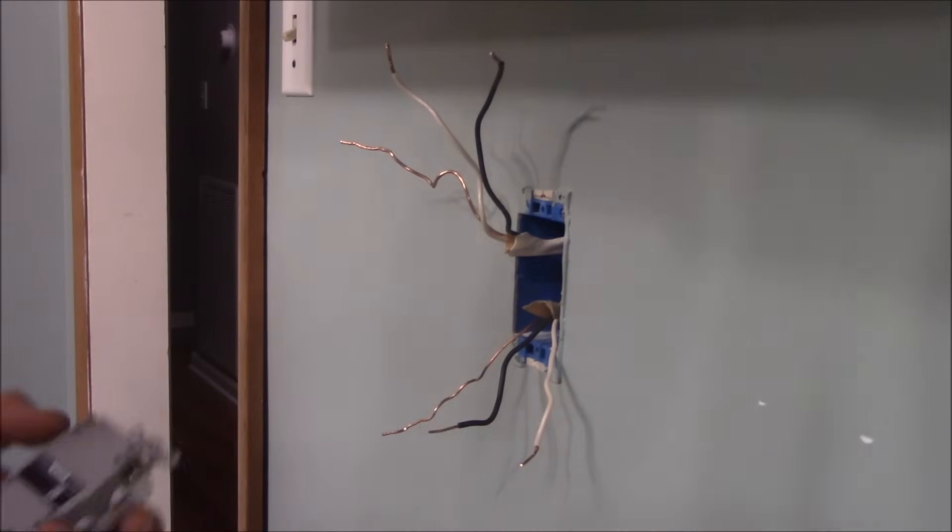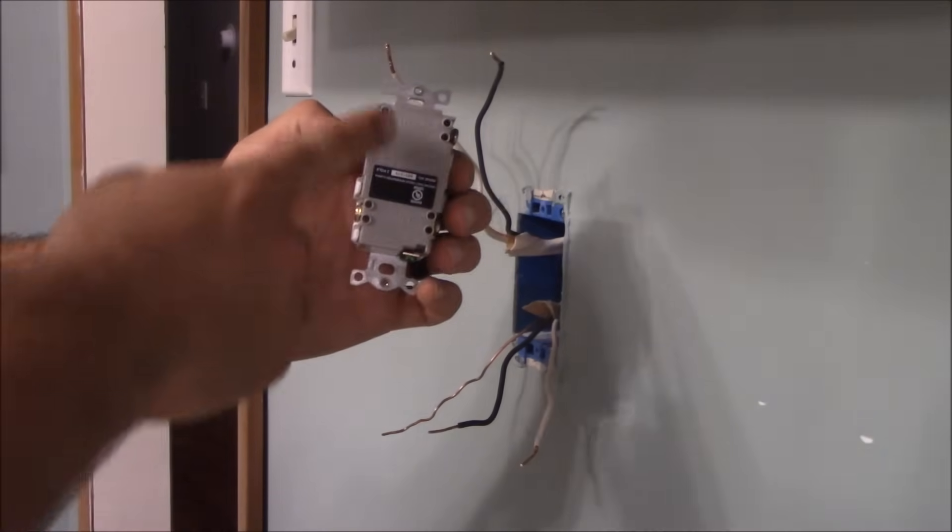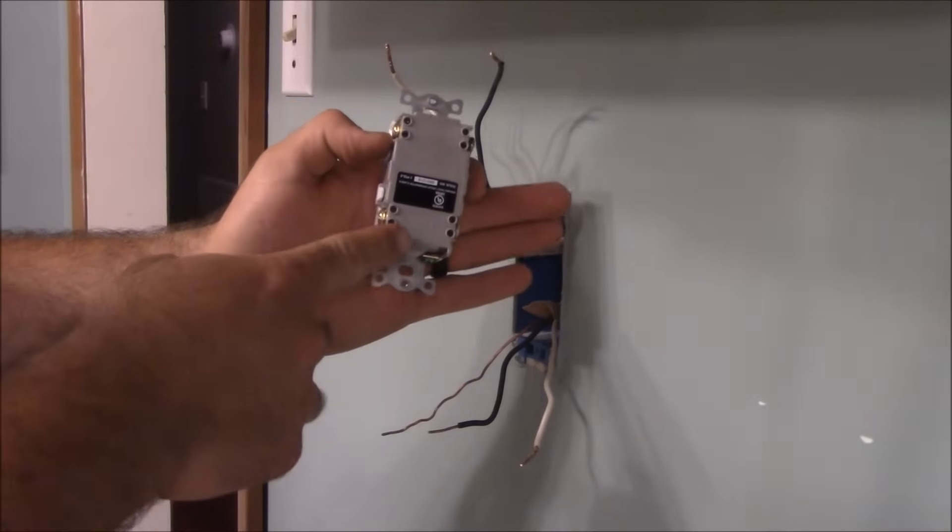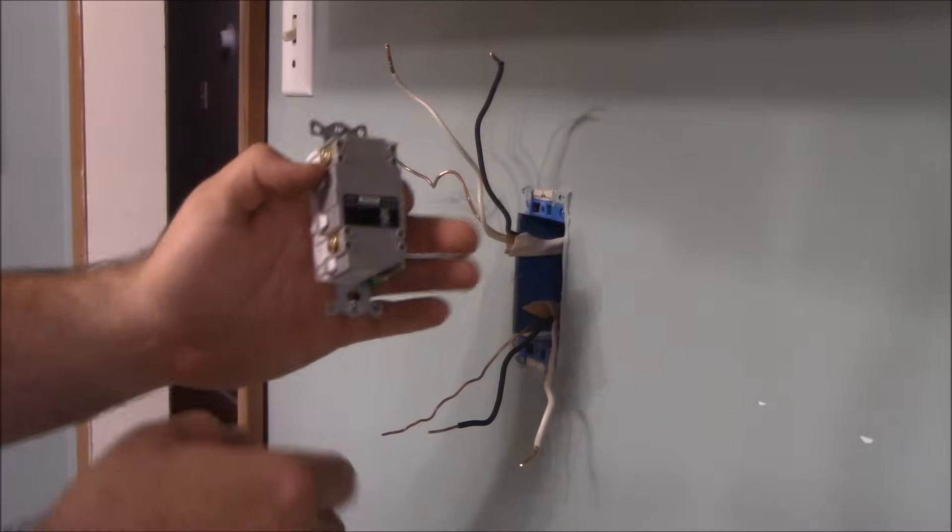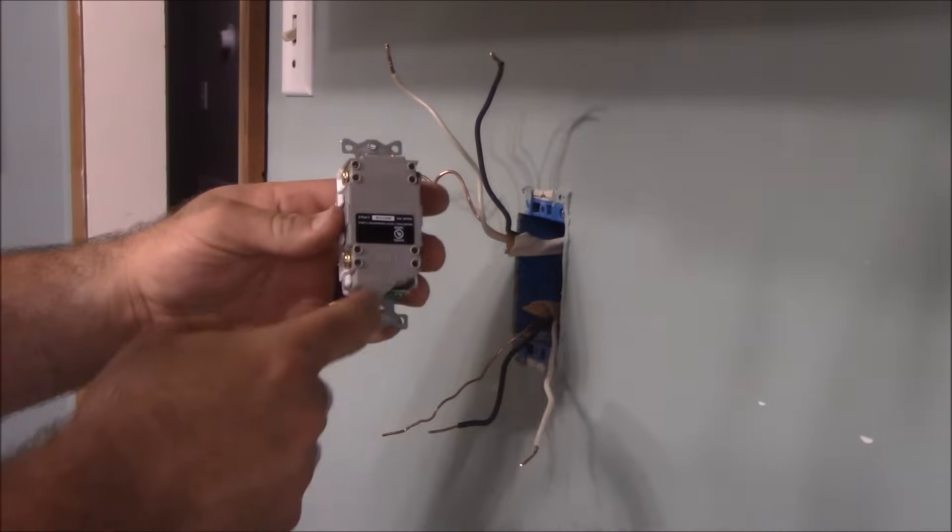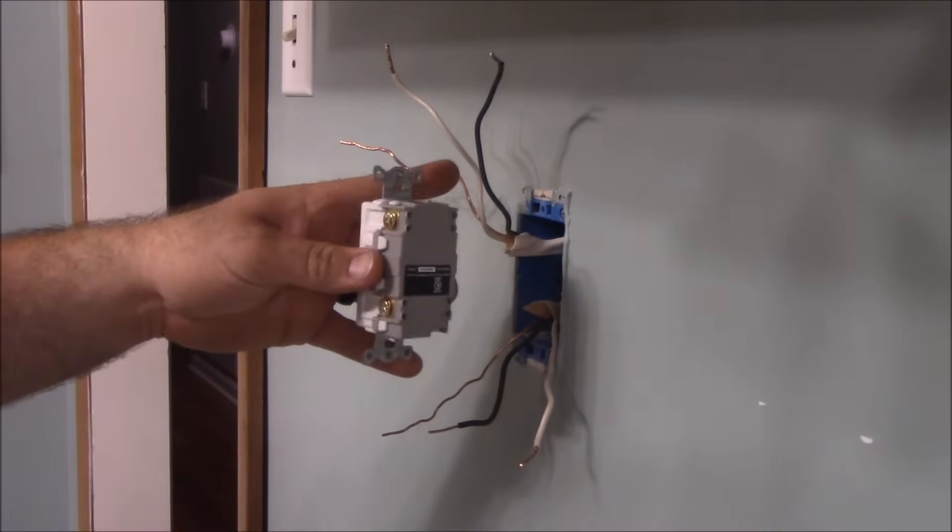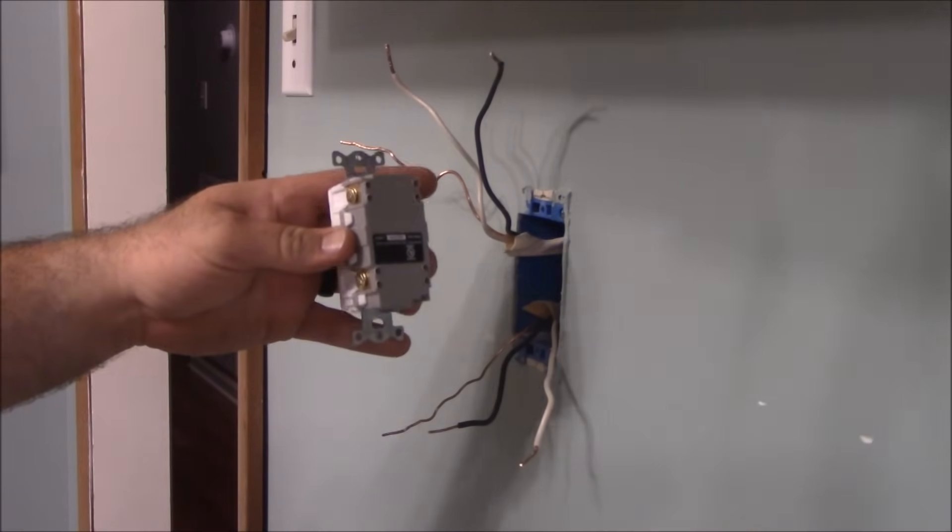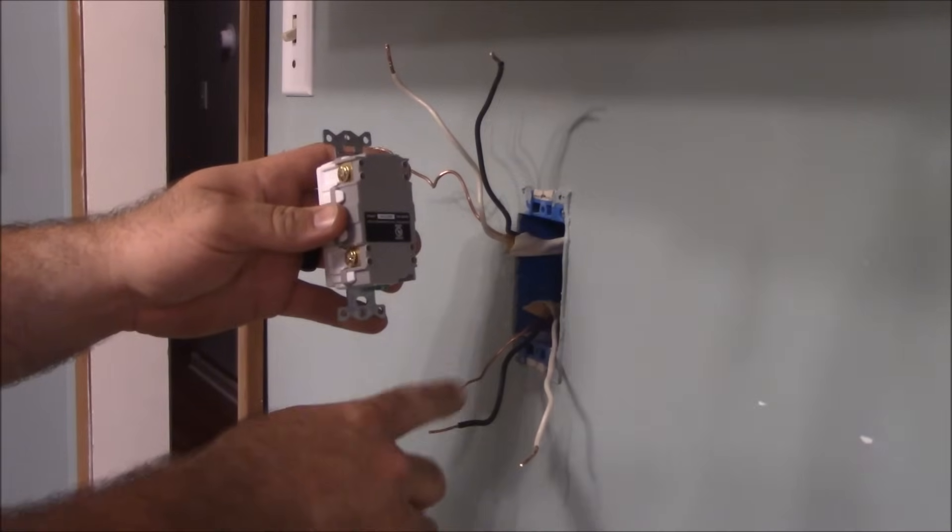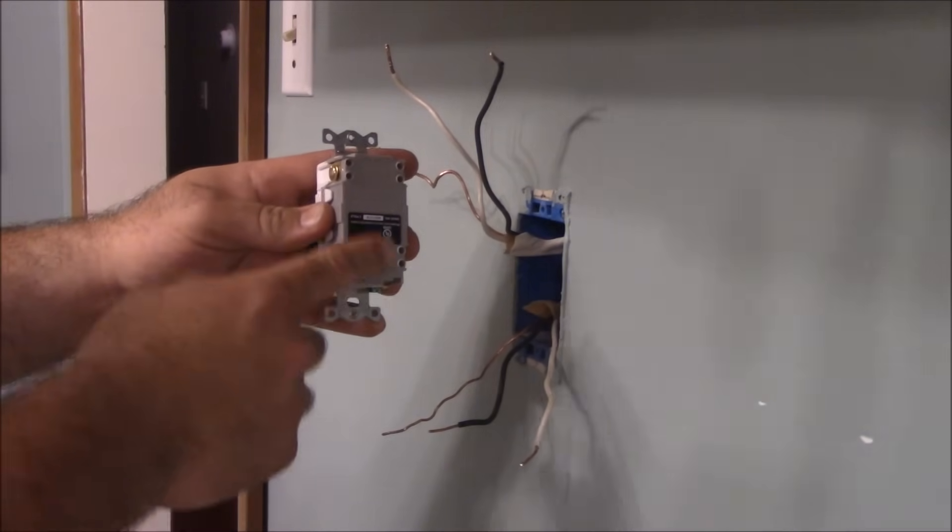Now, for our GFCI, you have a line and a load. You'll see it, it's written on the back of it here. The line is your hot wires coming in. So if you have just one wire coming in, then you're going to go ahead and hook it to the line side. But if you have two, that means this is going to feed another receptacle down the line. So you need to make sure that you put the hot side on the line side, and your other receptacle is going to be your load.